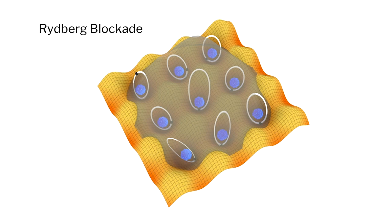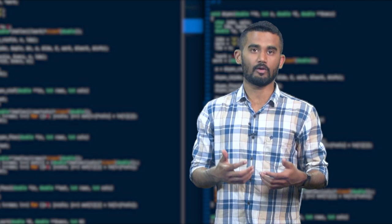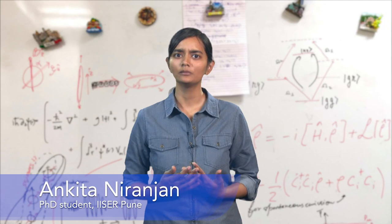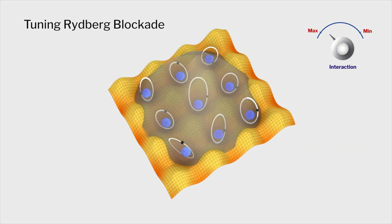Also, two atoms in Rydberg state can strongly interact with each other. This strong interaction blocks nearby atoms from going to the Rydberg state. This is called Rydberg blockade and it is a crucial tool in implementation of quantum gates which are used for quantum information processing and other applications. In our group, we study models based on Rydberg atoms using both theoretical and computational methods.